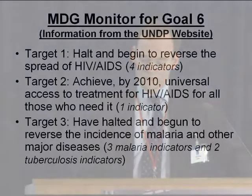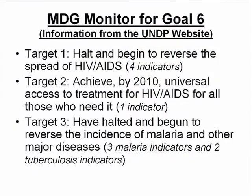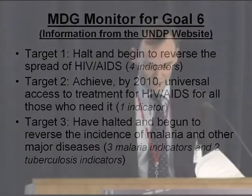Target one is to halt and begin to reverse the spread of HIV, AIDS. Target two, achieve by 2010 universal access to treatment for all those who need it. And target three, to have halted and begun to reverse the incidence of malaria and other major diseases. There are four indicators for target one, one for target two, and for target three there are three for malaria and two for tuberculosis.